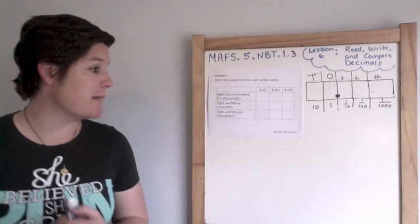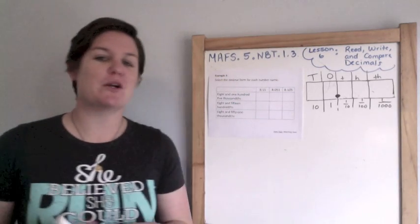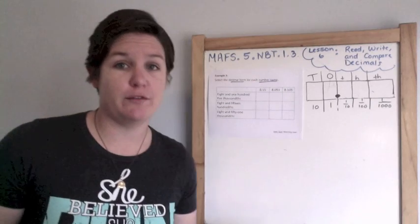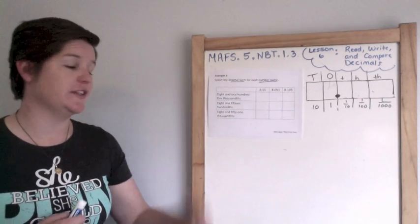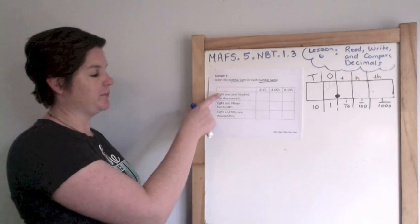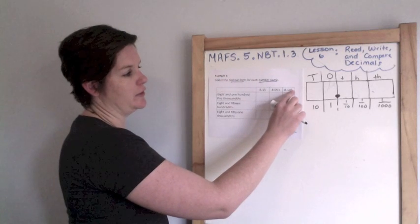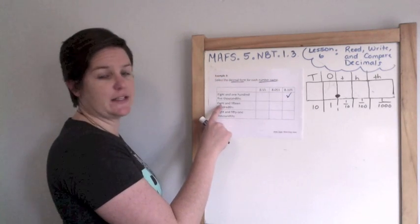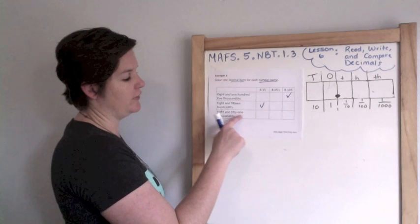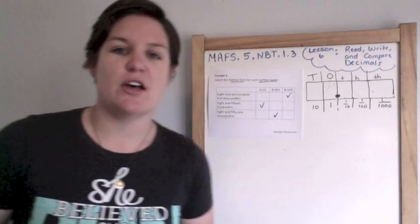Example three. This is a matching item — select the decimal form for each number name. The decimal form is the standard form; the number name is what we used to call word form. So here are our number names and here are our decimal forms. Eight and one hundred five thousandths — I'm looking for eight and one hundred five in the thousandths place. Eight and fifteen hundredths. Eight and fifty-one thousandths. That's awesome!